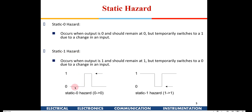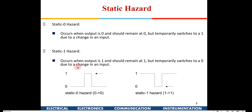A static zero hazard means the output is supposed to be zero for a certain input combination. One of the inputs changes, but the output is still supposed to be zero for that new combination. However, you find the output momentarily goes to one and comes back to zero — that one shouldn't be there, but it appears due to unequal propagation delays.